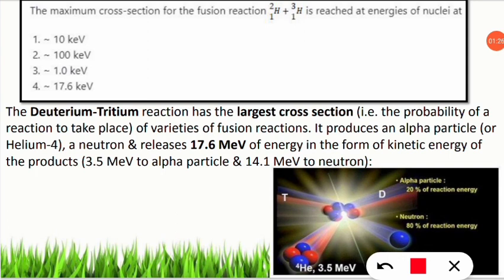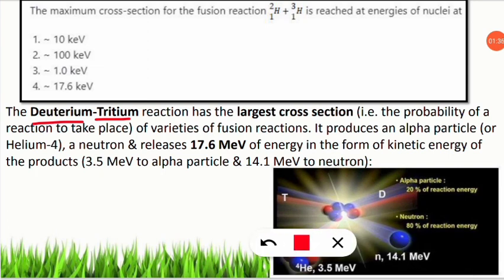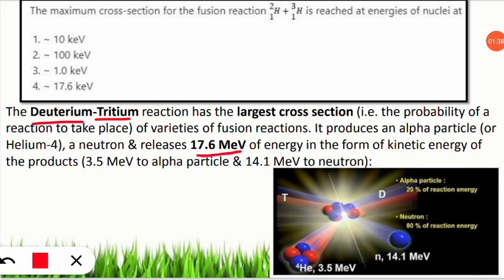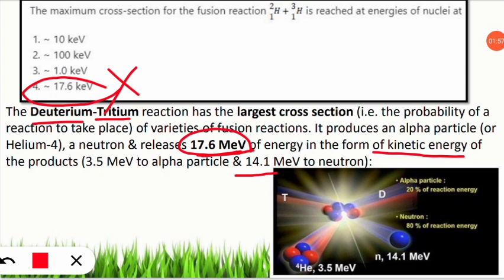That option was in students' minds because 17.6 MeV is the amount of energy released when the fusion reaction takes place between deuterium and tritium. So actually it is mega electron volt — if you selected kilo electron volt, it is also wrong. Option four is incorrect. The energy of 17.6 MeV is divided into 14.1 MeV for the neutron and 3.5 MeV released when the alpha particle (helium-4) is produced.